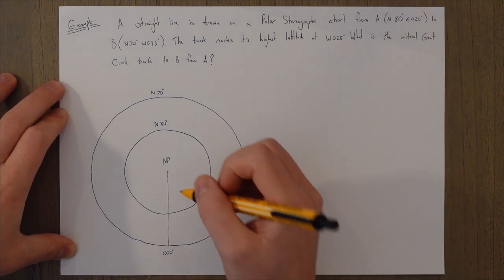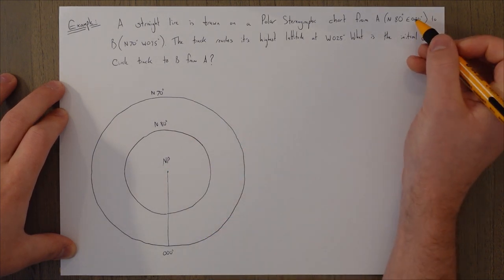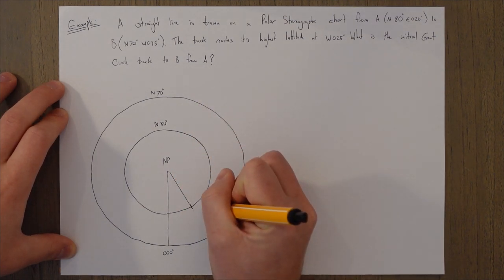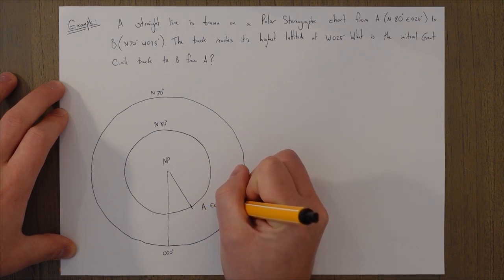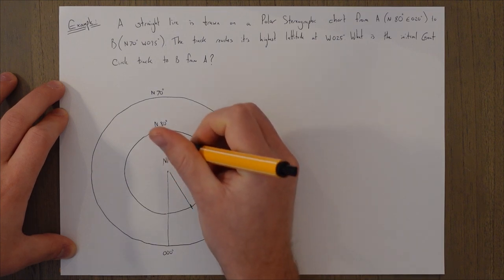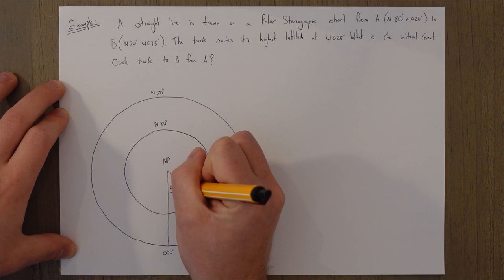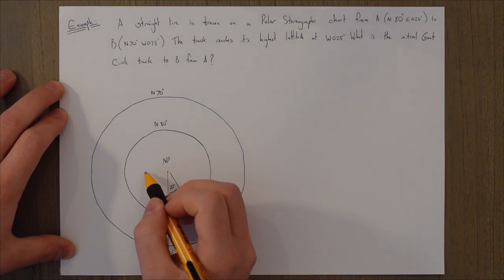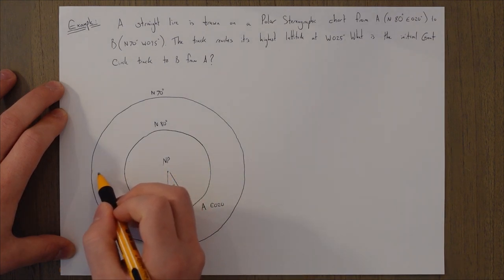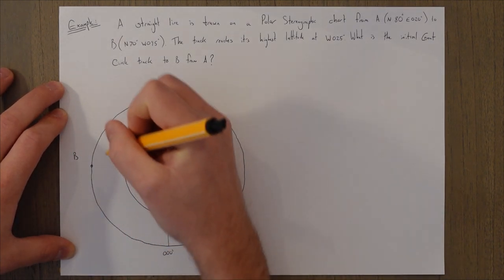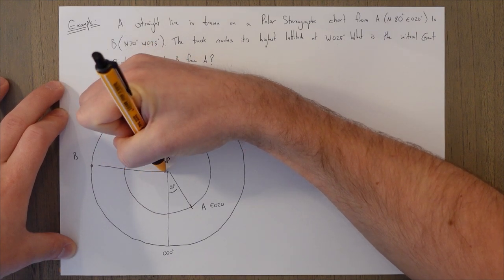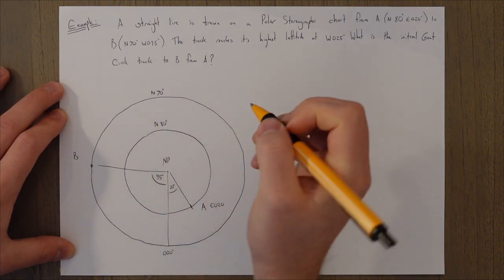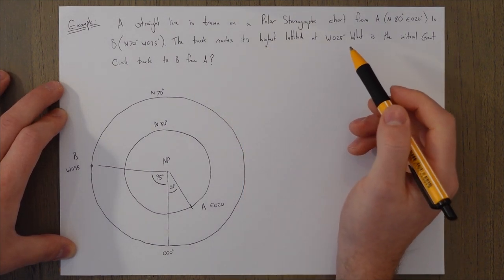Point A is at east 020, roughly here on the north 80 ring, making that angle 20 degrees. Next, point B is at west 095, roughly here, making this angle 95 degrees.